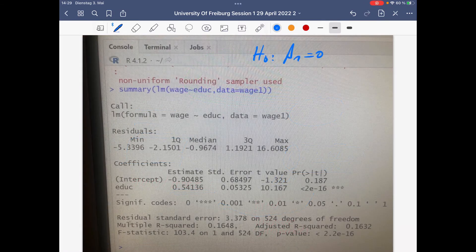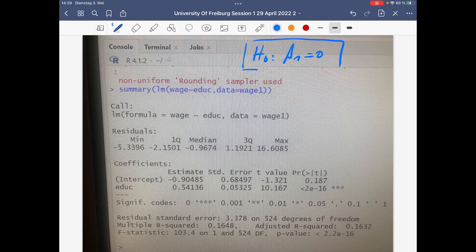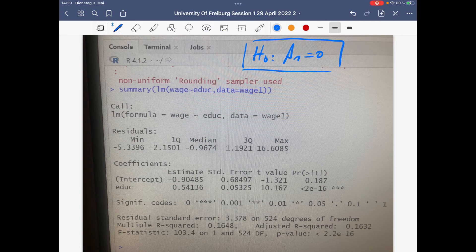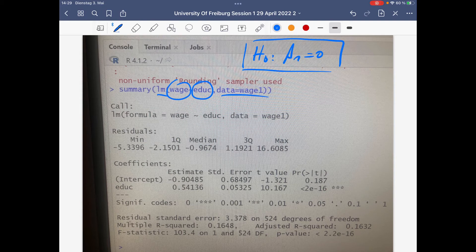So if our null hypothesis is H0 beta 1 equals zero, so that there is no relationship between wage and education, we want to do an empirical estimation using OLS, the linear model. Then we regress wage on education given the sample, which is wage one.